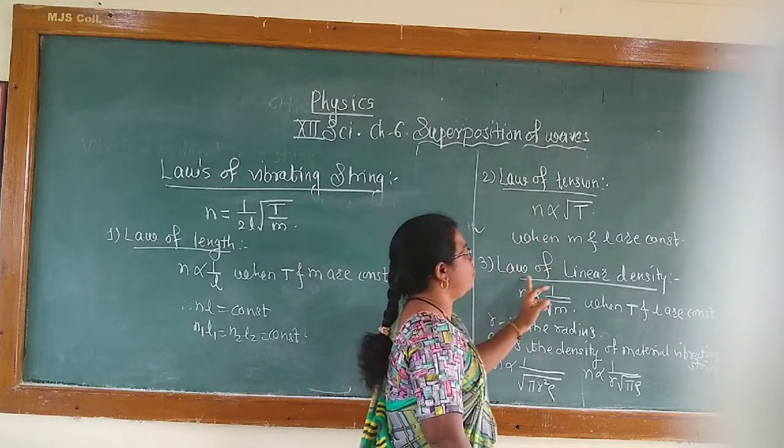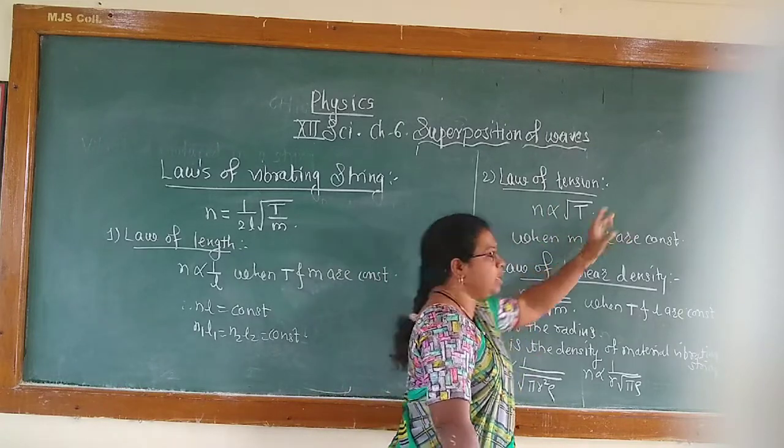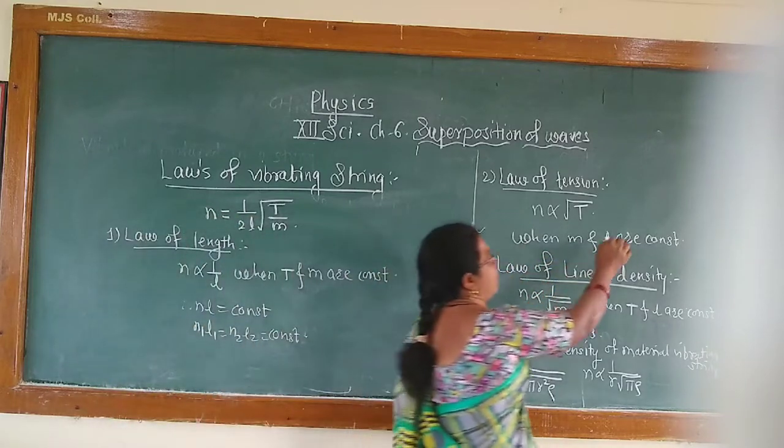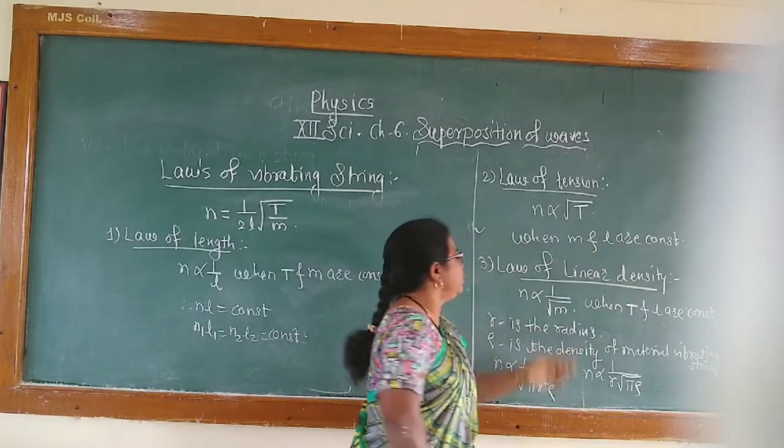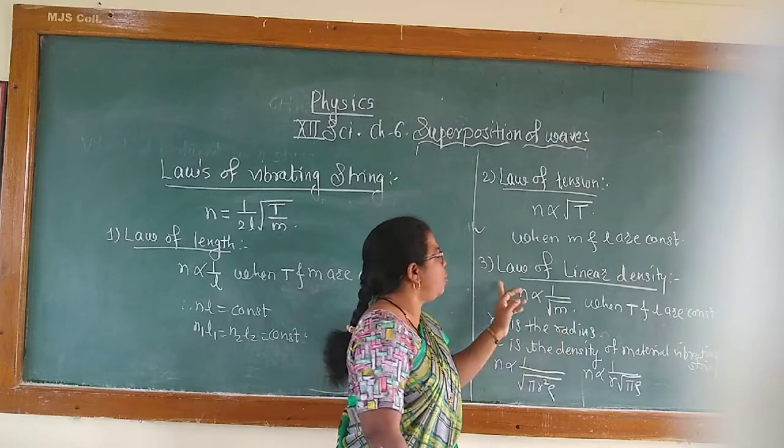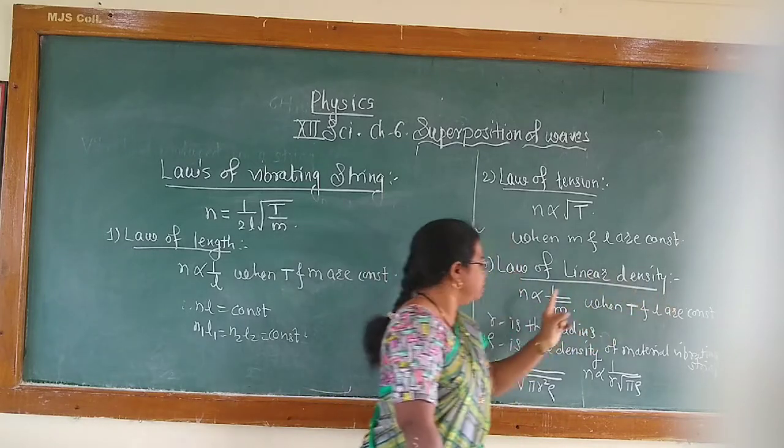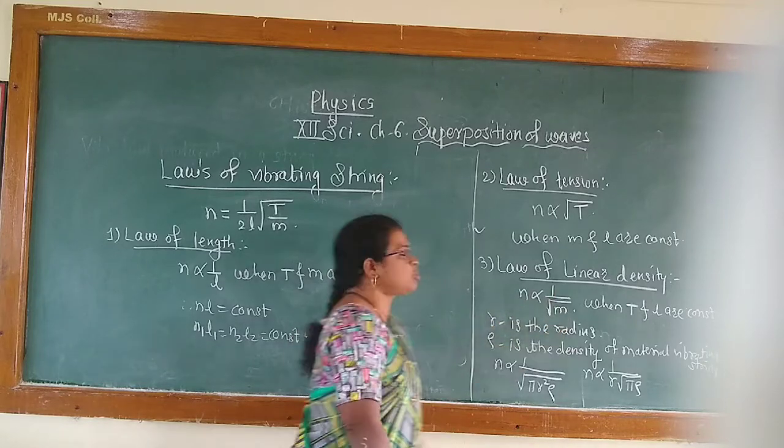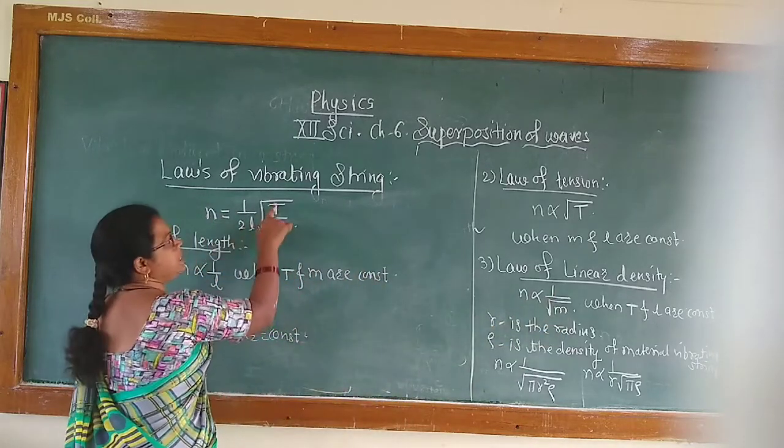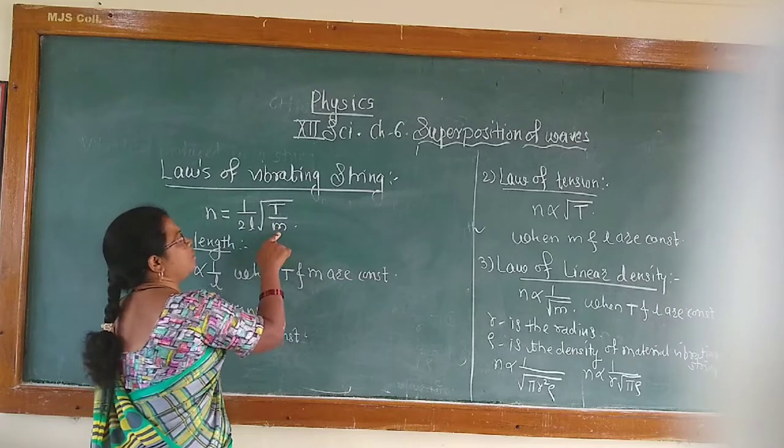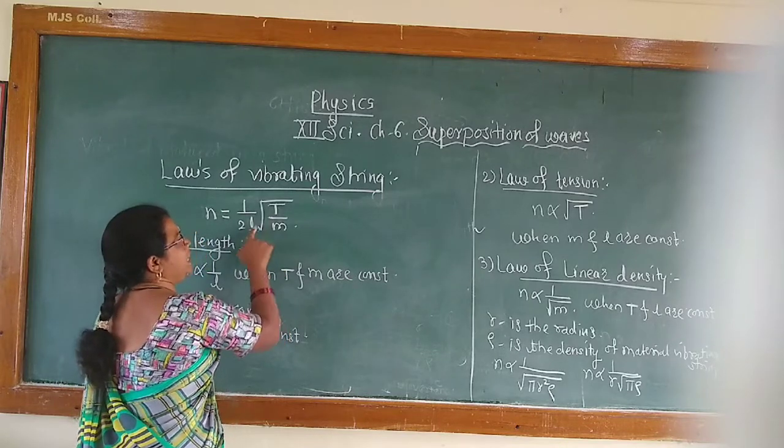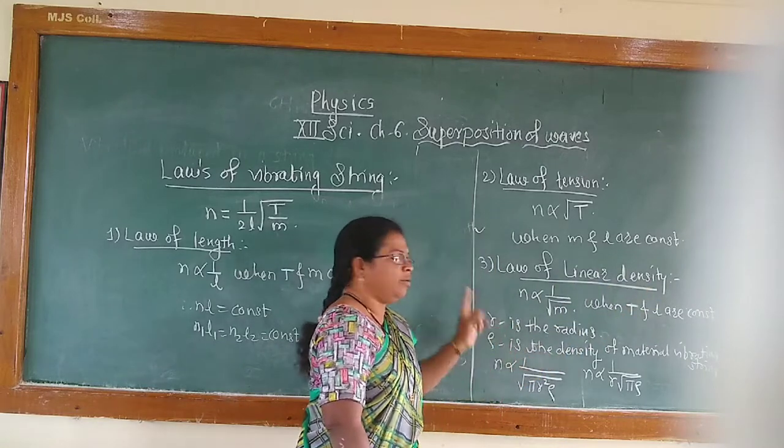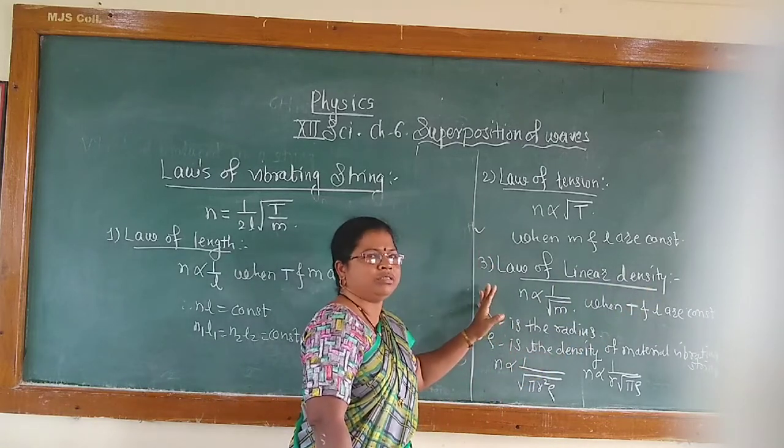Then, third law, where in this case M and L are constant. One more law, that is law of linear density. N is inversely proportional to square root of M when T and L are constant. This is called law of linear density. These are three laws which we have given already.